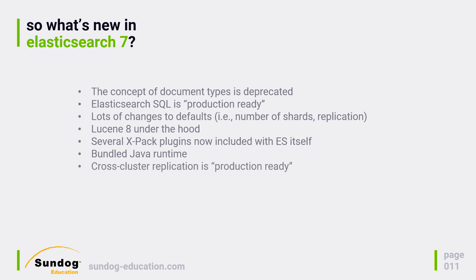Replication across clusters is now possible in ES7. There's also a new feature called Index Lifecycle Management, or ILM. It automates the progression of your data through a lifecycle — through hot, warm, cold, and deletion phases. This can be really useful for automatically moving log data into read-only, less expensive storage over time, and ultimately deleting it once it's no longer required to be retained. We'll cover this in more depth later in the course.